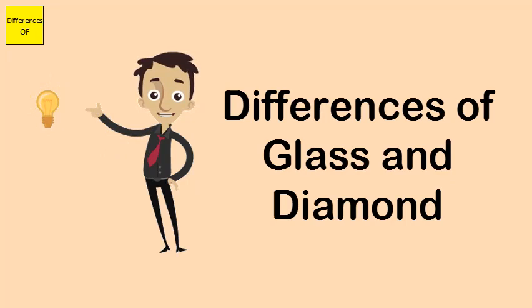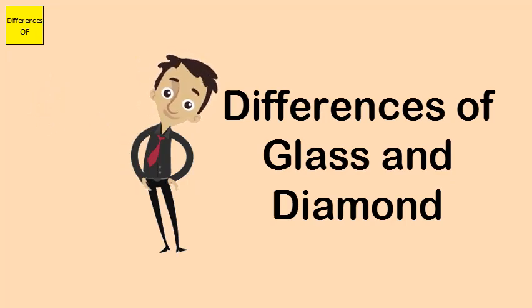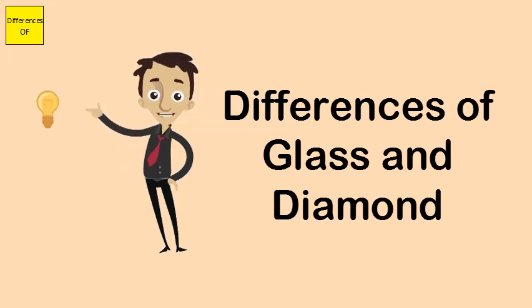Glass cannot cut diamond, but diamond can cut glass. Glass is more transparent, while diamond is not as transparent.